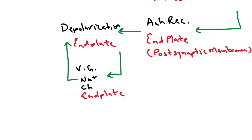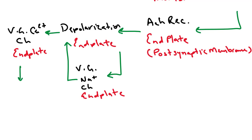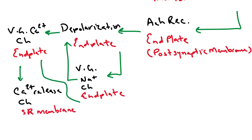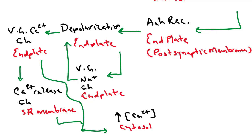The depolarization activates voltage-gated calcium channels on the end plate, which simultaneously leads to the opening of calcium release channels on the SR membrane. Both of these lead to calcium release into the cytosol, increasing cytosolic calcium concentration, which leads to muscle contraction. That is essentially how a muscle contracts.